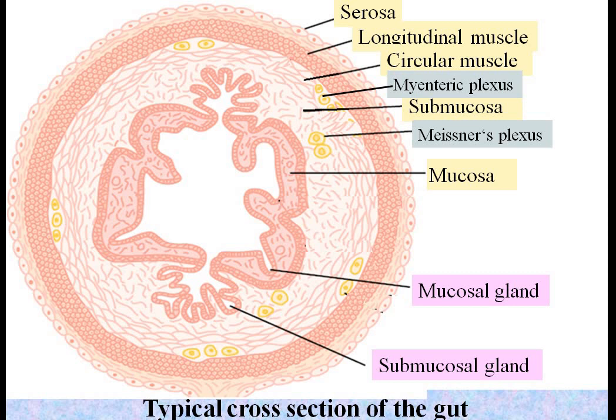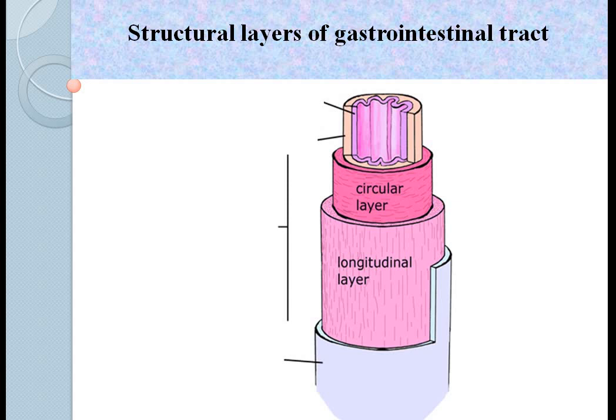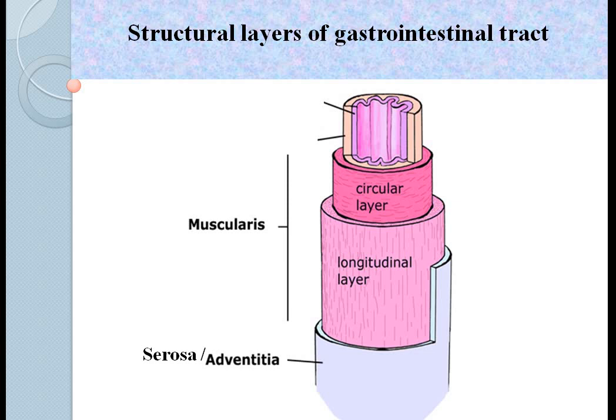Here is another diagram showing the structural layers of the gastrointestinal tract. The outermost layer is the serosa, which is also called the adventitia. Then the muscular layers consisting of the longitudinal layer and the circular layer, followed by submucosa. Internally, the gastrointestinal tract is lined by mucosa.